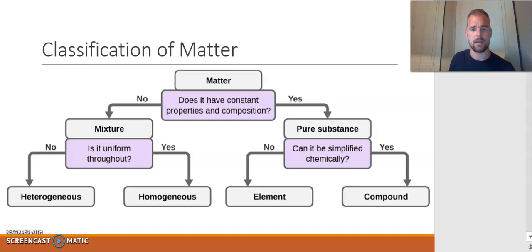Here is a schematic visual of what we just talked about. Matter can be defined into two main types — mixtures and pure substances — further defined as heterogeneous and homogeneous mixtures, and elements and compounds as the pure substances. In the next video, we're going to look at some examples of how you can classify matter based on this classification scheme.